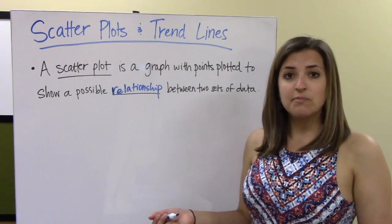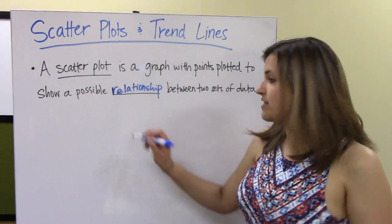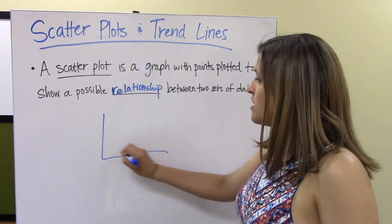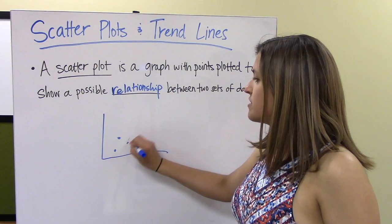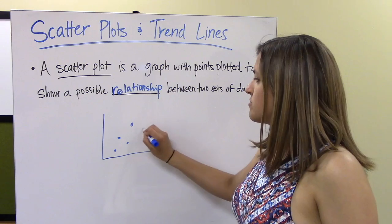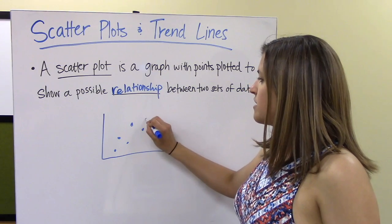The scatter plot looks something like this — a normal graph with just a bunch of points here and there to represent our data.